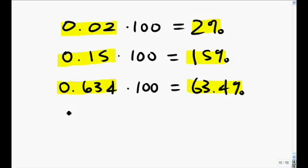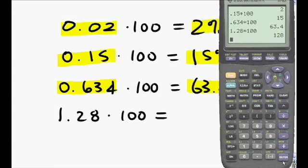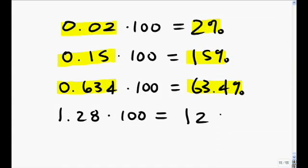If we look at the numerical relationship of 1.28 and multiply by 100, we get 128 percent. That is, the numerical value of 1.28 represents 128 percent. This is working backwards.